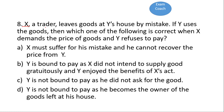The next question: X, a trader, leaves goods at Y's house by mistake. If Y uses the goods, which of the following is correct when X demands the price and Y refuses to pay? The correct option is B — Y is bound to pay, as X did not intend to supply the goods gratuitously and Y enjoyed the benefit of X's act. X left the goods by mistake, which does not give Y any right to use them. If Y uses them, he has to pay for it. This is provided under Section 72.